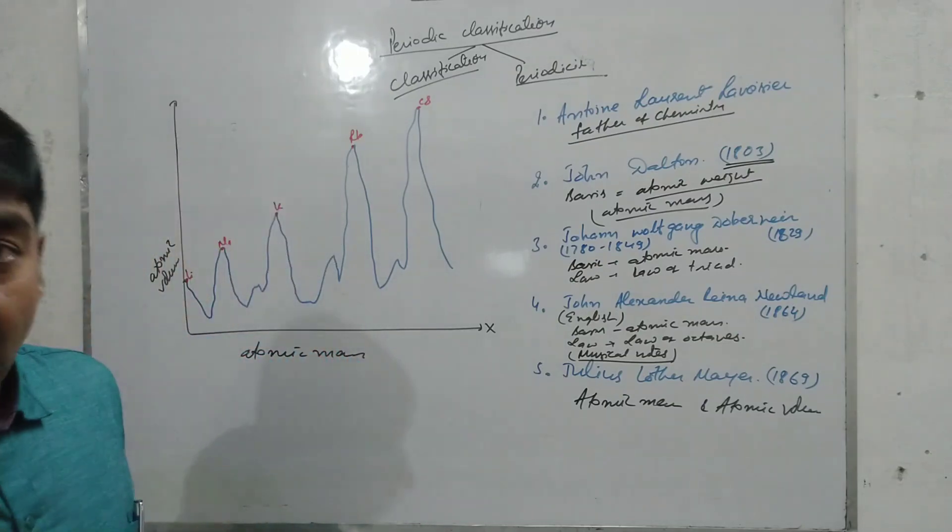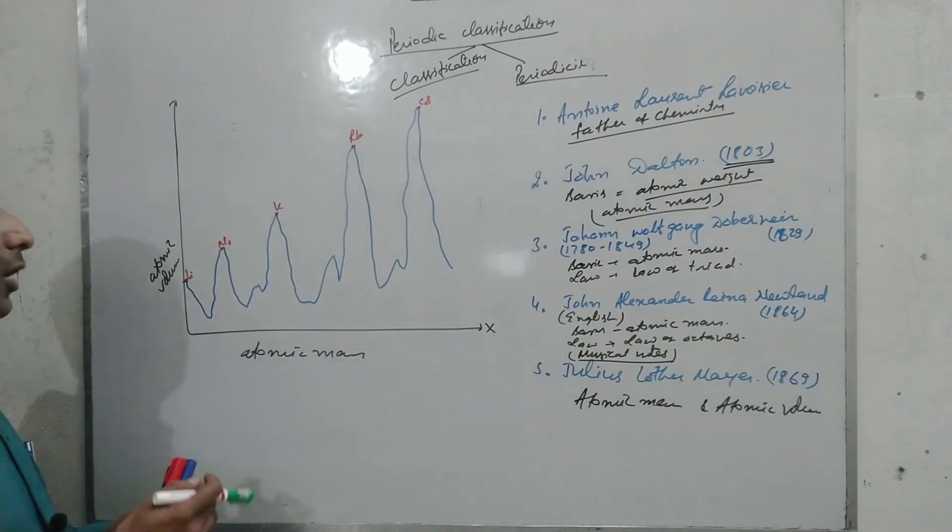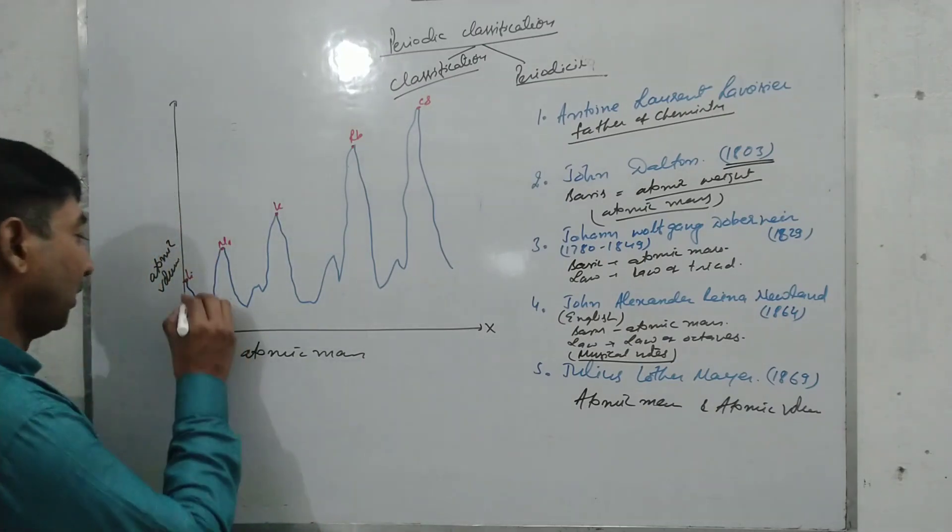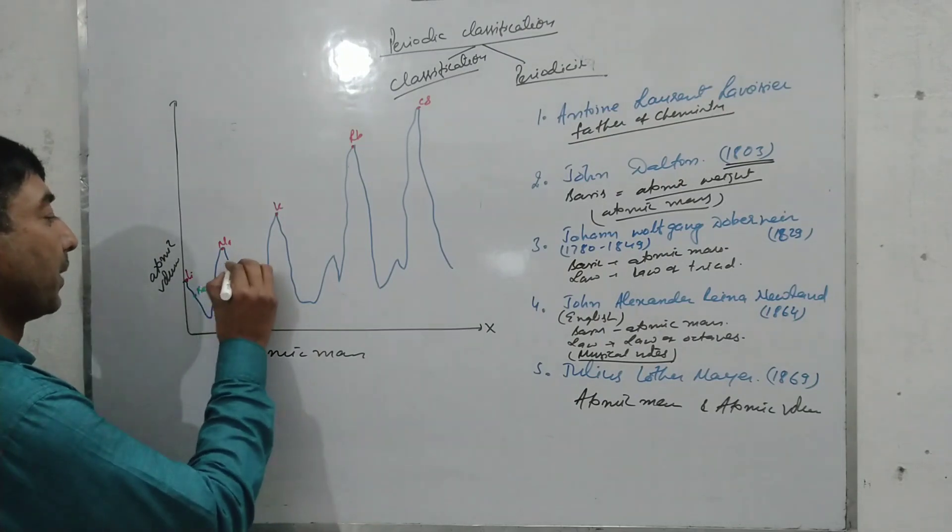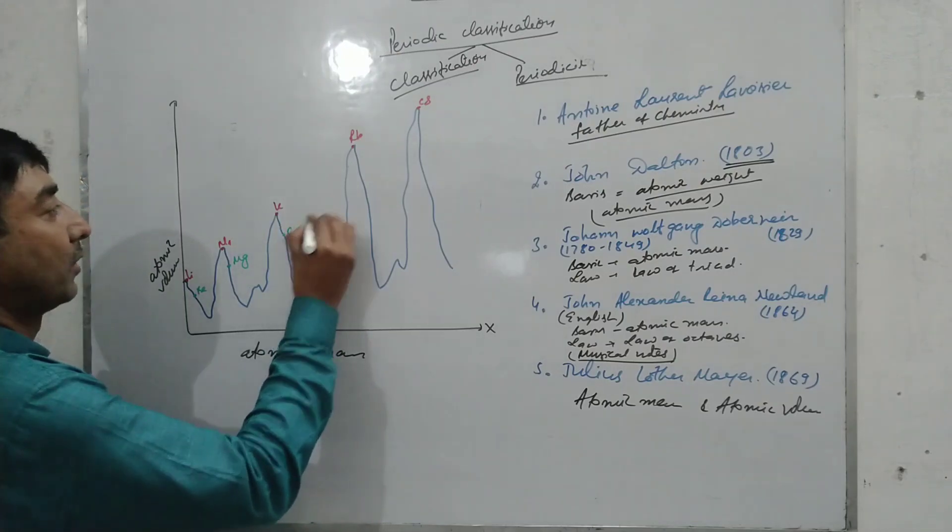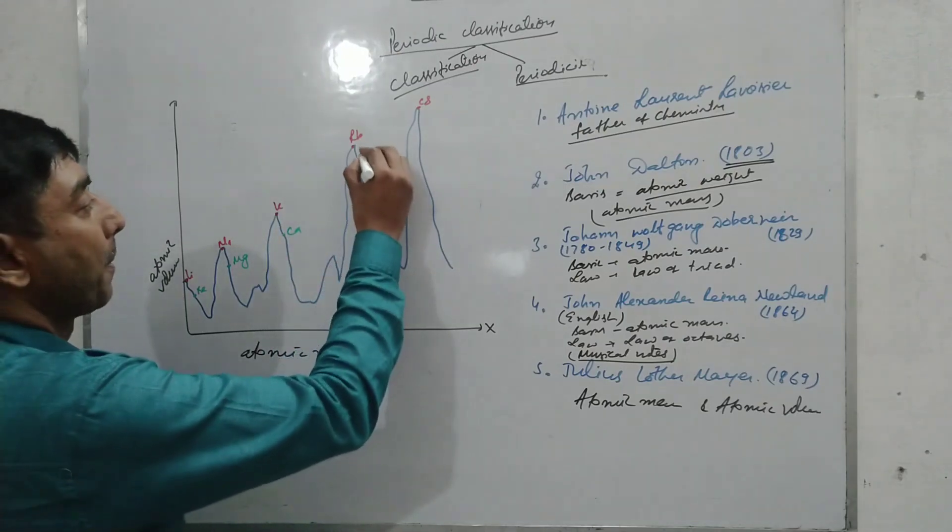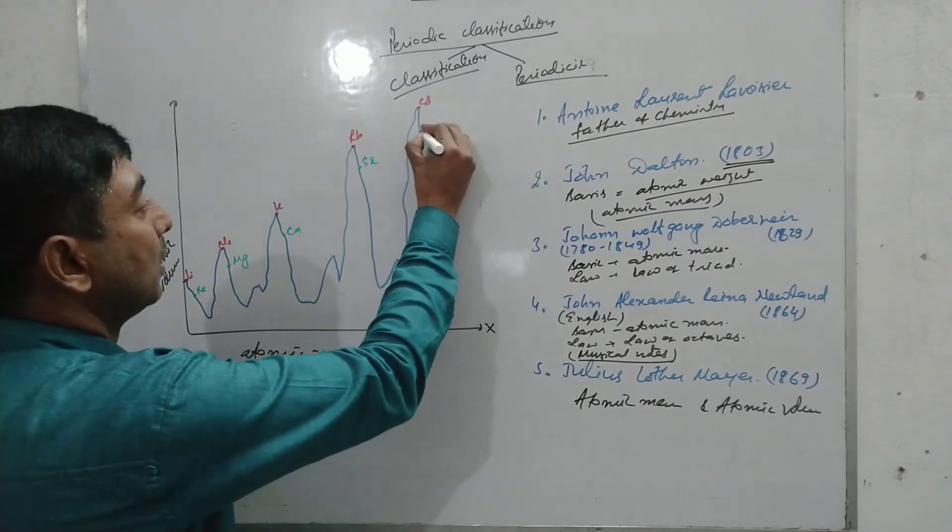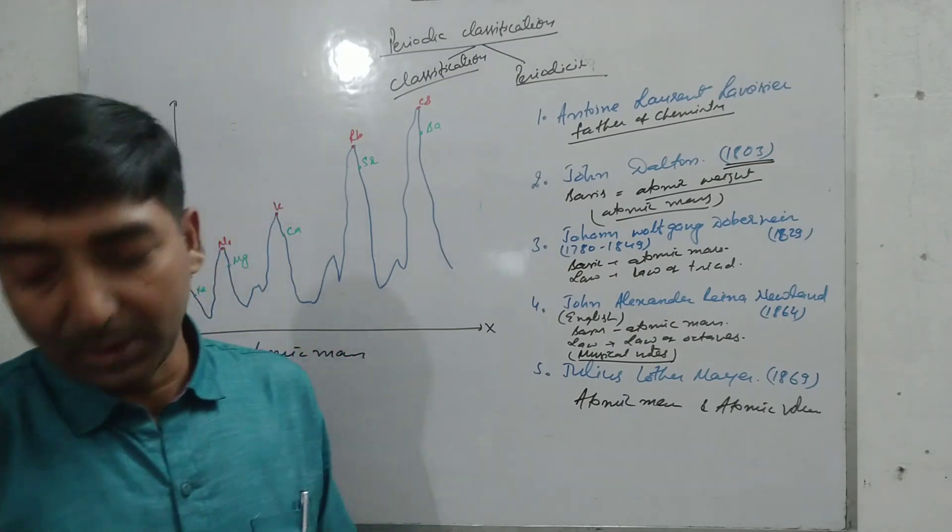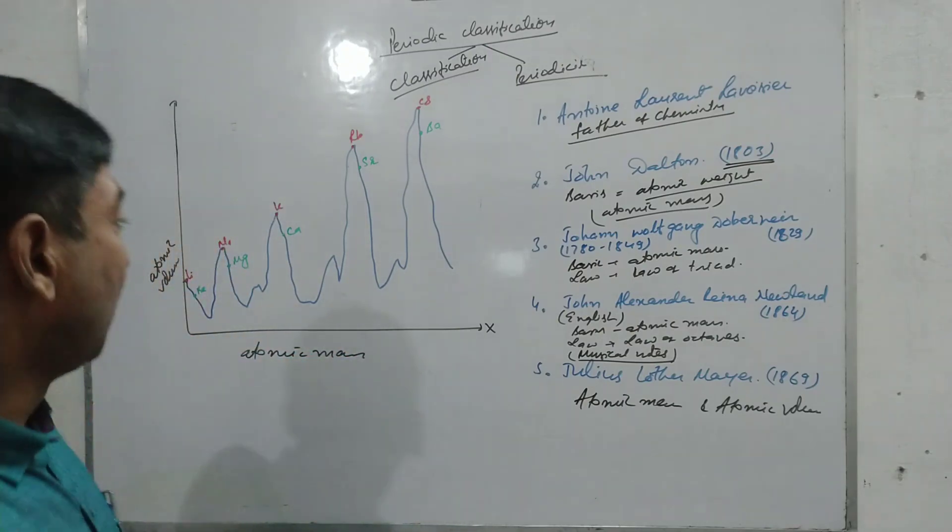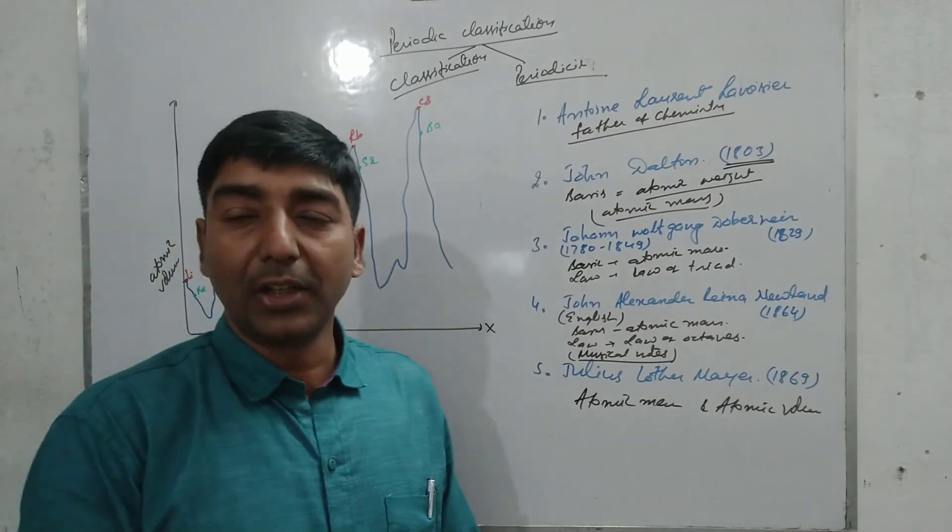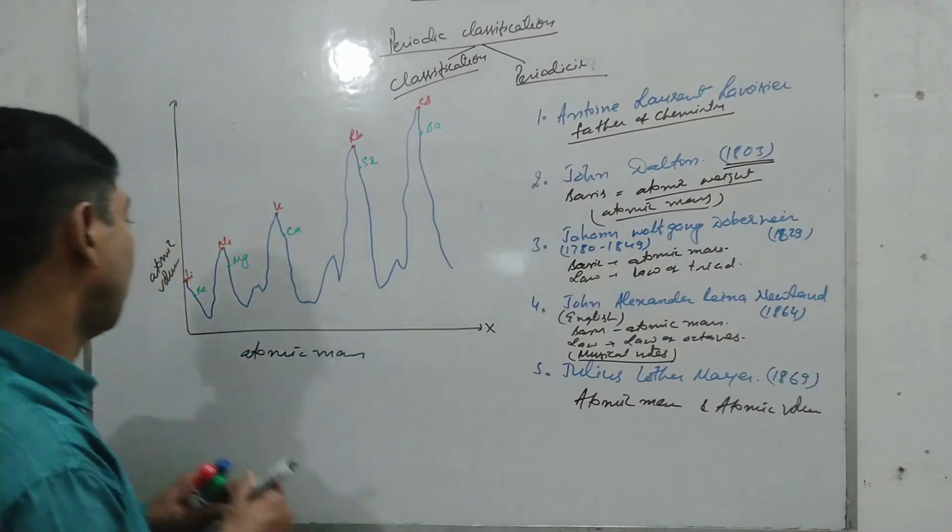While the less electropositive elements, alkaline earth metals like beryllium, magnesium, calcium, strontium, barium, occupy the descending limb of the graph.